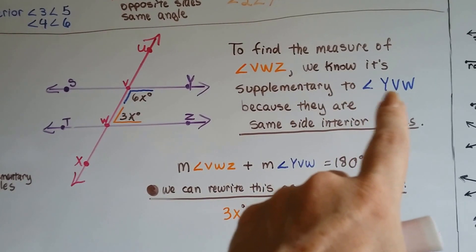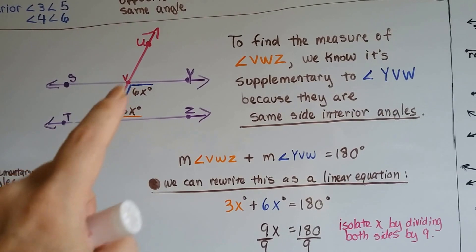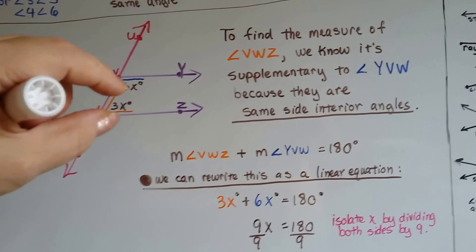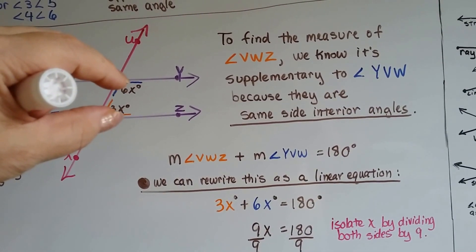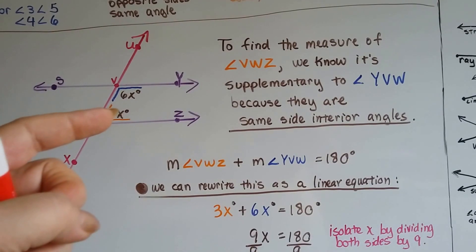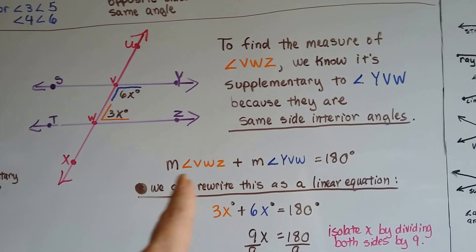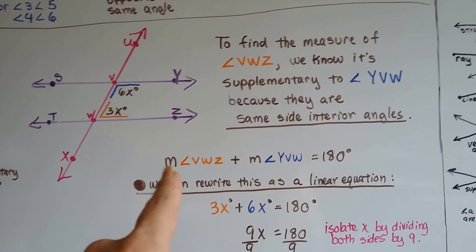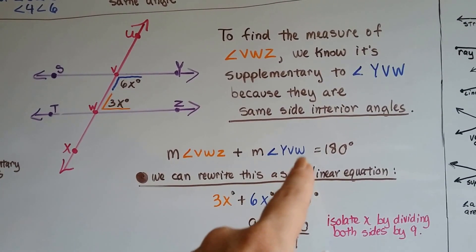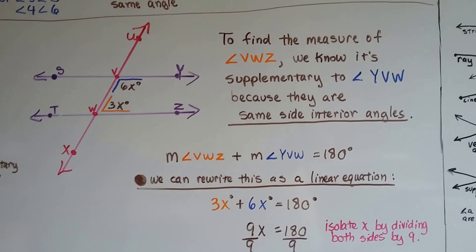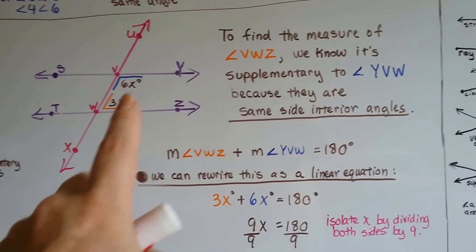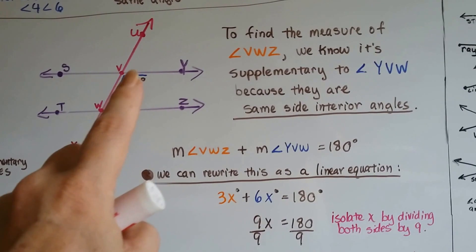We know angle VWZ is supplementary to angle YVW. Here's Y, V, and W — V is the vertex, shown in blue. Because they're on the same side and interior to the parallel lines, they're supplementary and total 180 degrees. That's the rule. So the measure of angle VWZ plus the measure of angle YVW equals 180 degrees. The little m with the angle symbol means 'measure of angle.'